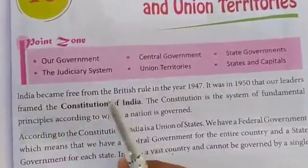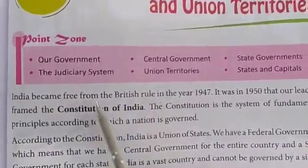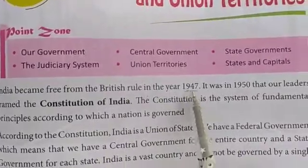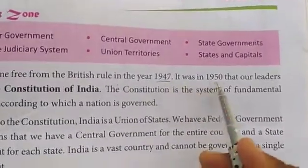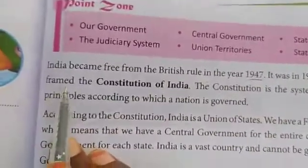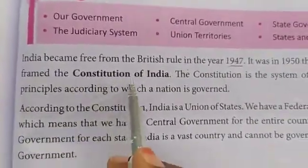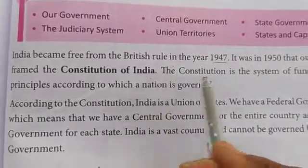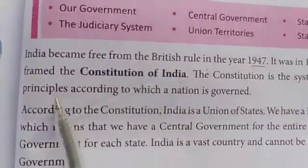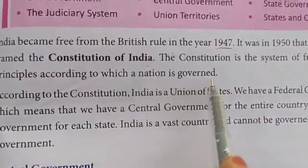Already you know that our country was under British rule for many years and we got freedom from British rule in the year 1947. In 1950, all our leaders framed a book called the Constitution of India. This Constitution is the fundamental principles according to which a nation is governed.